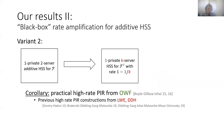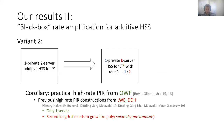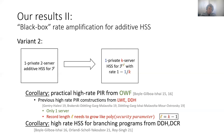This is compared to previous high-rate PIR constructions from stronger assumptions such as LWE or DDH. In those constructions we only require one server, but the downside is that the record length L needs to grow like a polynomial in the security parameter, while our result gives a different flavor of high-rate PIR where the record length can be independent of the security parameter and just depends on the number of servers. As a second corollary, we get high-rate HSS for branching programs from DDH or DCR.